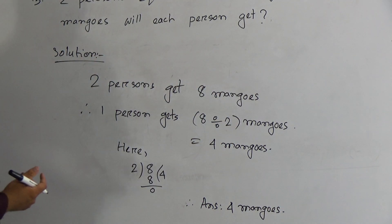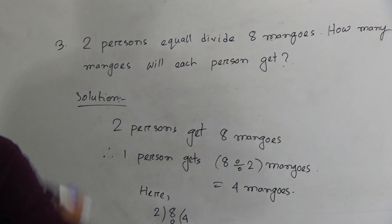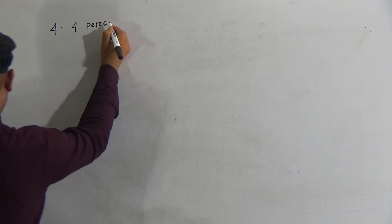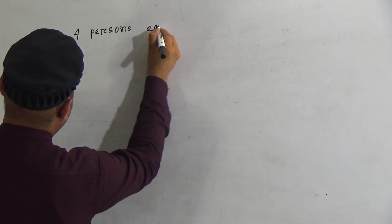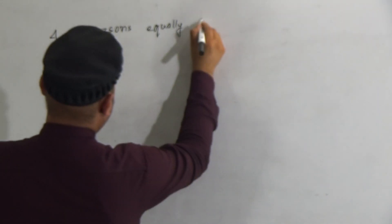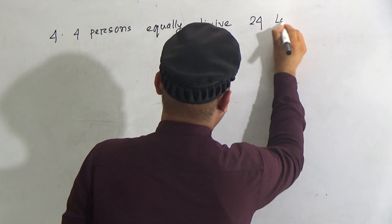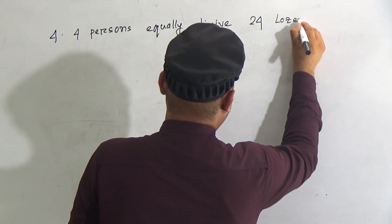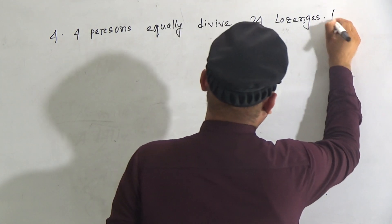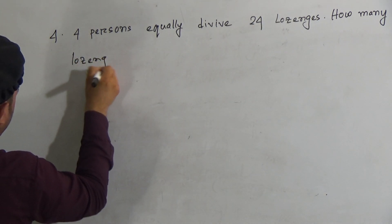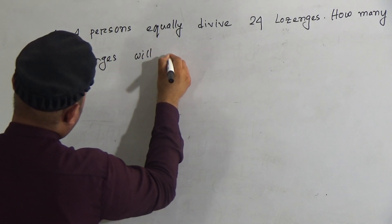Hope you understood question number 3. Now go to the next question, question number 4. Look at your book: 4 persons equally divide 24 lychees. How many lychees will each person get?